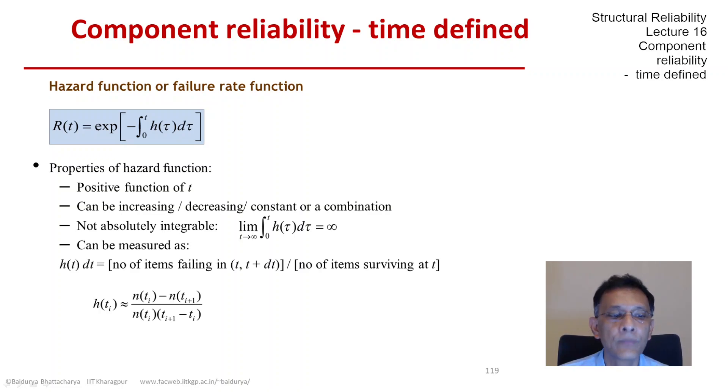We can measure the hazard function by definition. h(t)dt is roughly the number of items failing in a window of time t to t plus dt, divided by the number of items that have survived up to now. You can approximate that in a testing program as the ratio of the number of items failing between t_i and t_{i+1}, divided by the length of that window times the number of items that survive at t_i. That would be an approximate value of the hazard function from a test program.